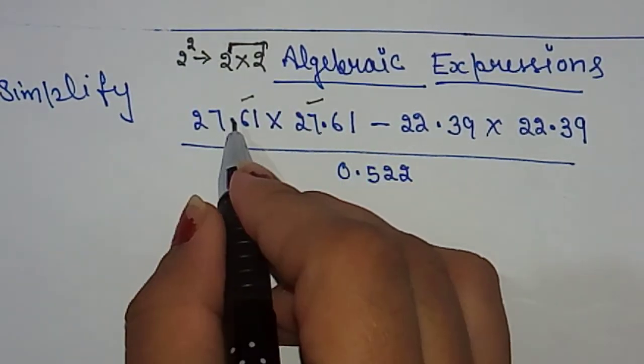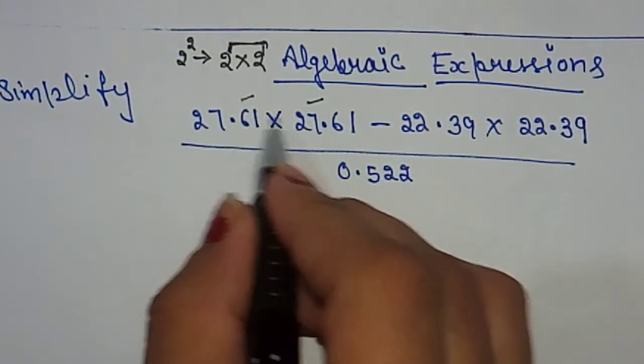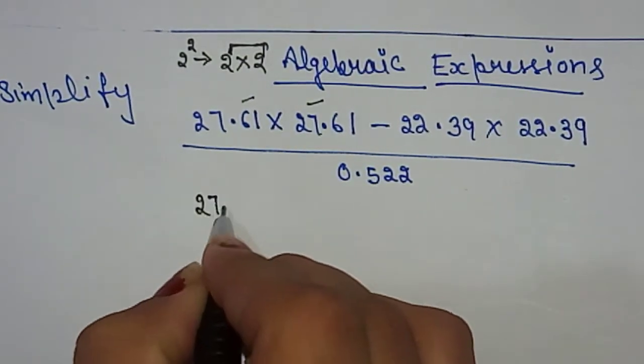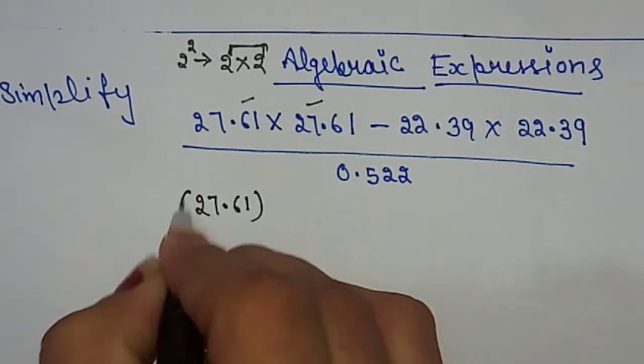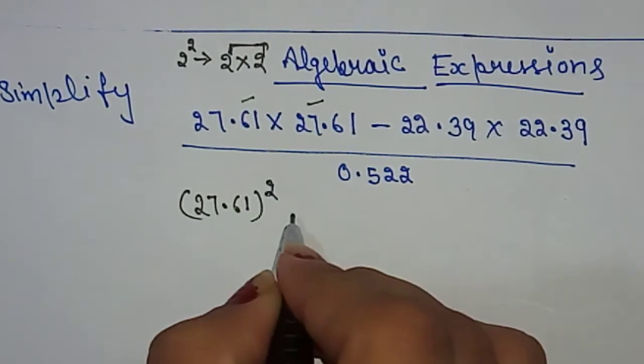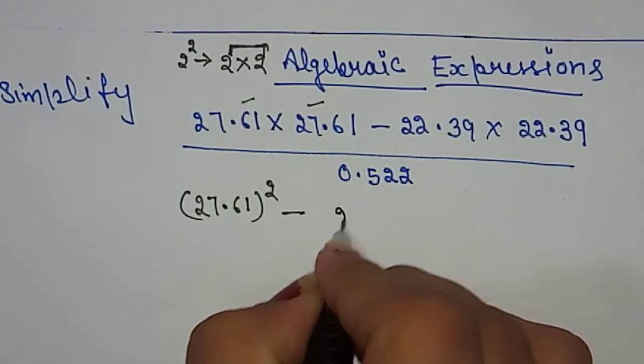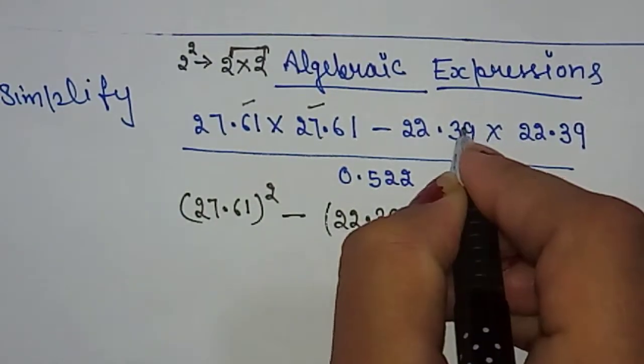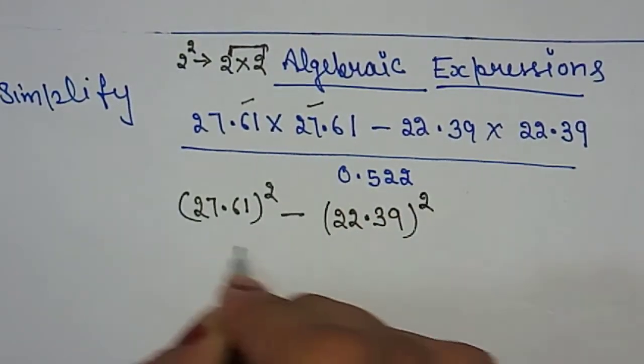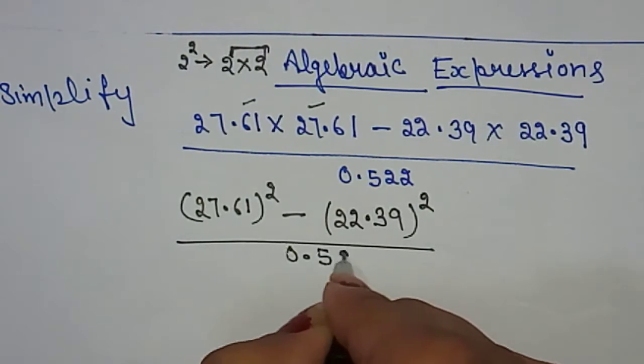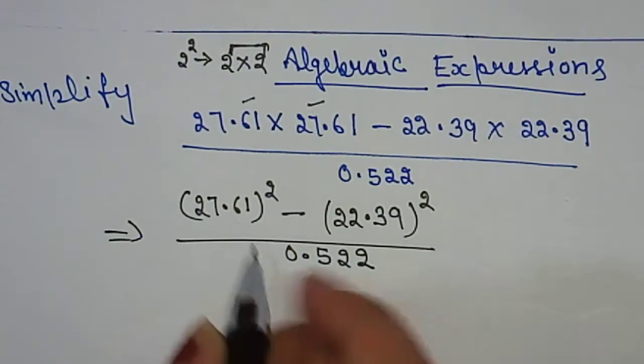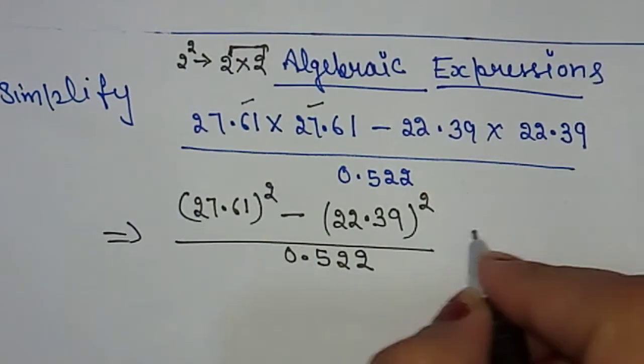If you have given the same number two times, then it becomes 27.61 squared, right? So minus again 22.39, how many times? One, two - squared. Then divided by 0.522. So the next step will be to solve this number. The property...